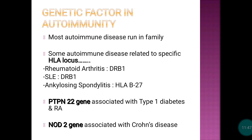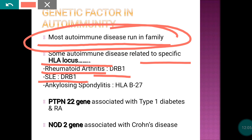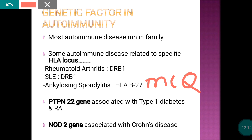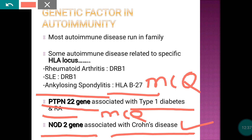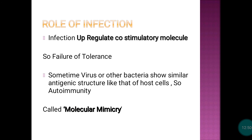Regarding genetic factors: certain autoimmune diseases run in families because they are linked to specific HLA loci. For example, HLA-DR1 is associated with rheumatoid arthritis and SLE; HLA-B27 is associated with ankylosing spondylitis. The PTPN22 gene is associated with type 1 diabetes and rheumatoid arthritis. The NOD2 gene is associated with Crohn's disease, an idiopathic inflammatory bowel disease.